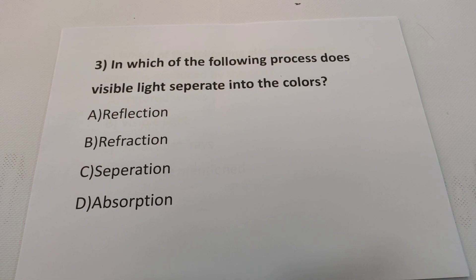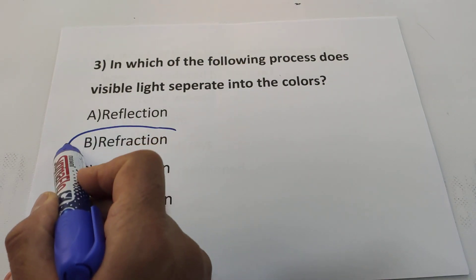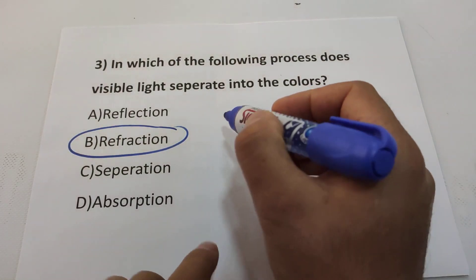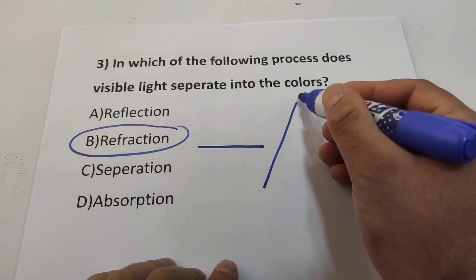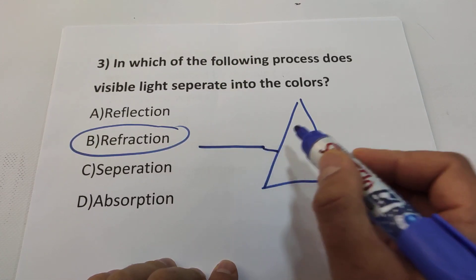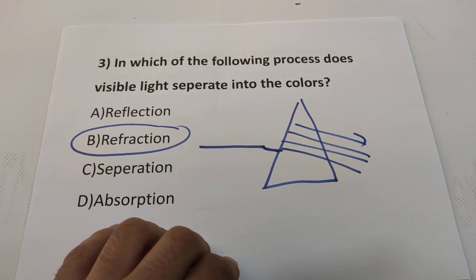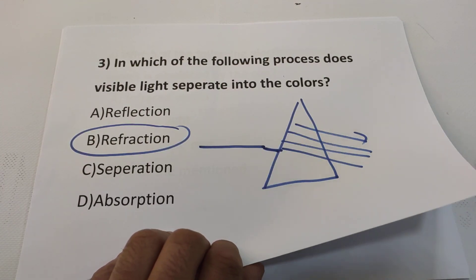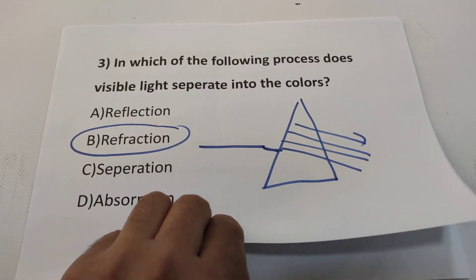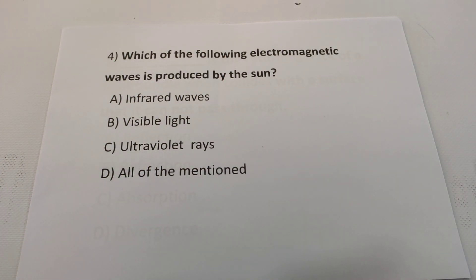Question 3: In which of the following processes does visible light separate into colors? It is refraction. When light passes through a prism, it breaks down into seven colors — ROYGBIV: red, orange, yellow, green, blue, indigo, violet.